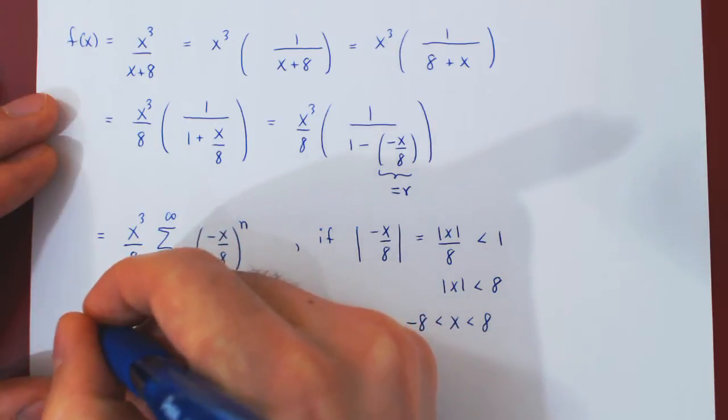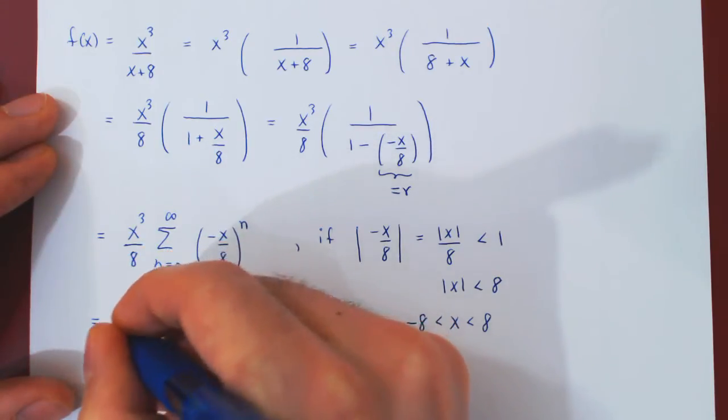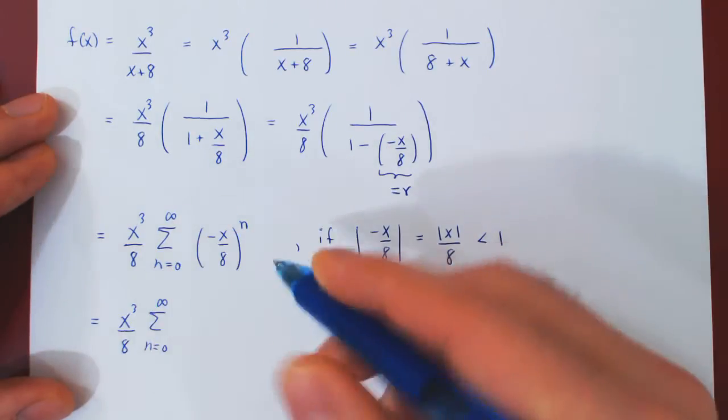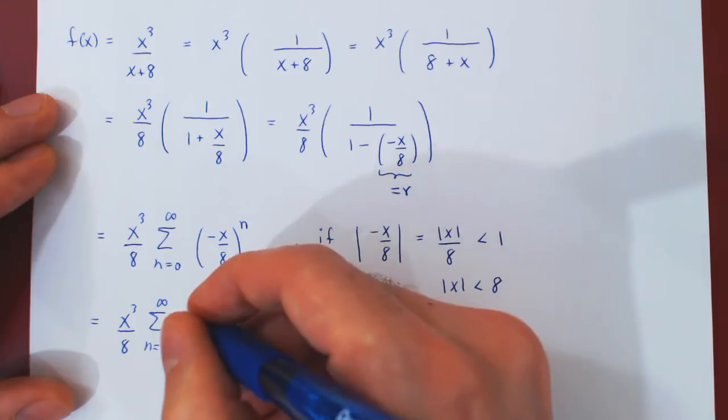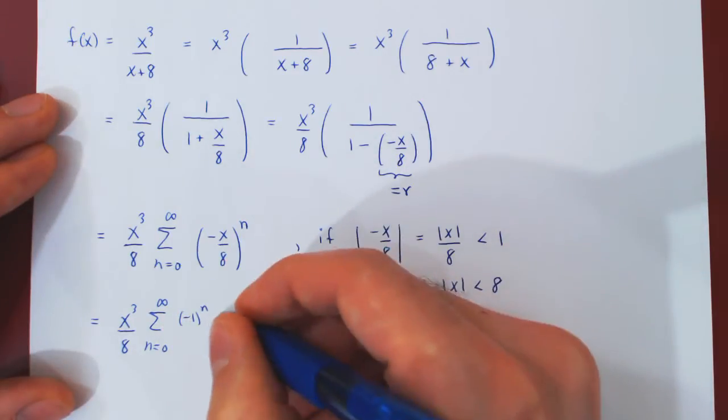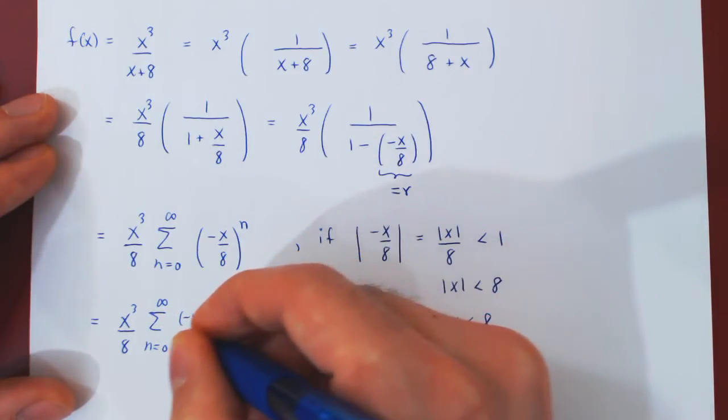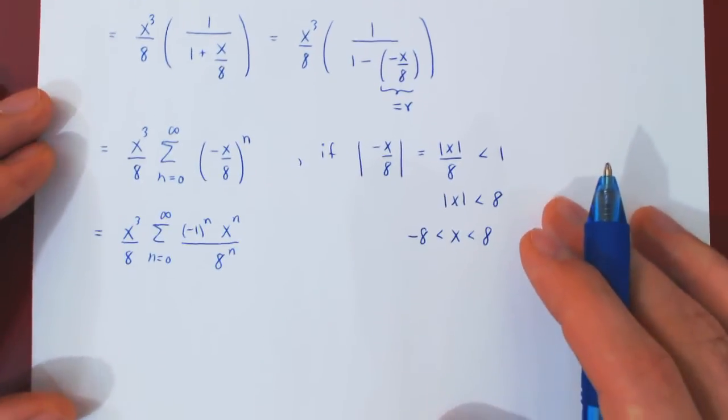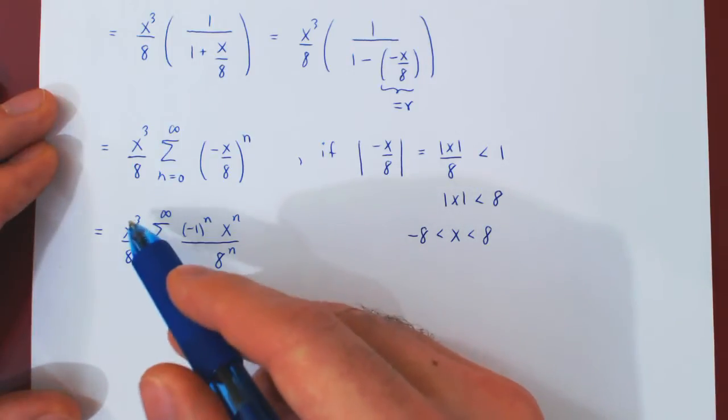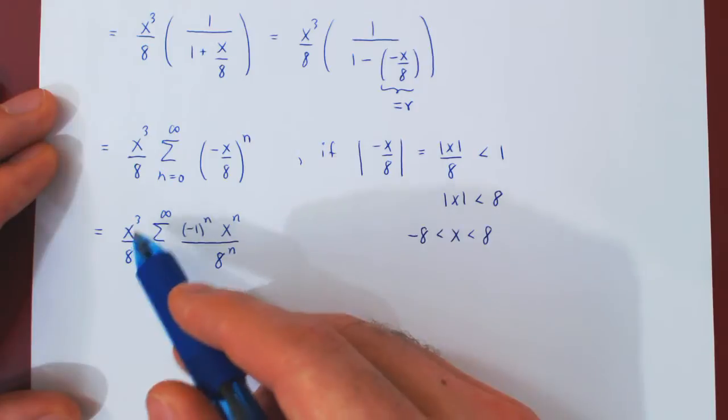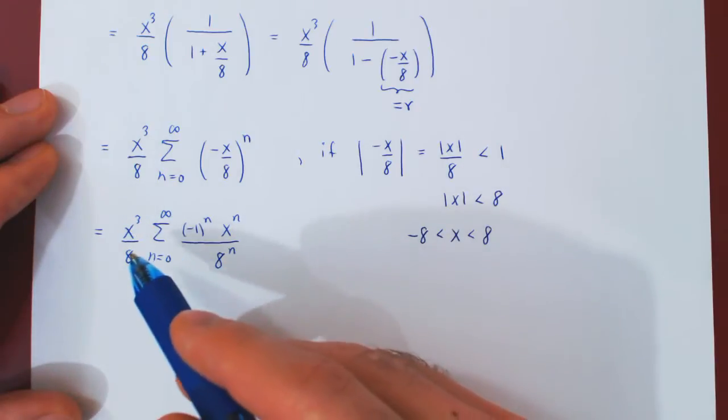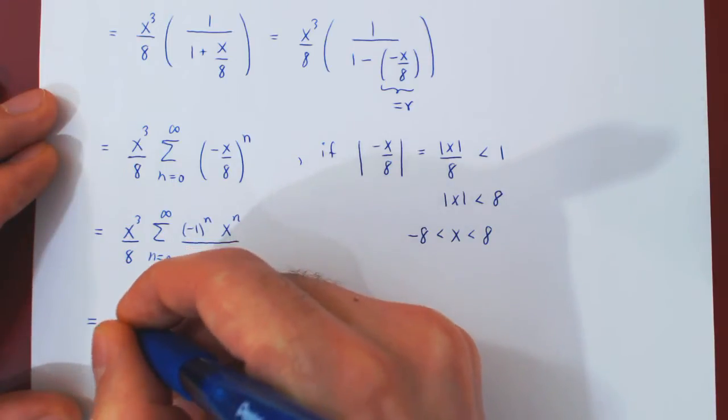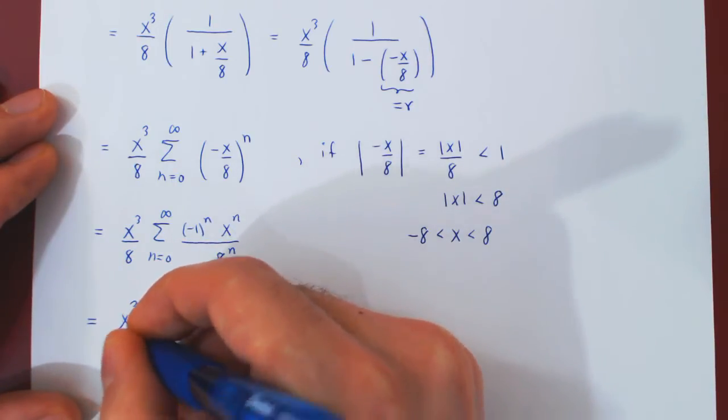And now we can simplify a little bit. So x cubed over 8. And I can break these terms up, so negative 1 to the n, x to the n over 8 to the n. And I can do one last thing, that is, with respect to n, x cubed over 8 is a constant, so I can bring this in and combine the x cubed with the x to the n and the 8 with the 8 to the n.